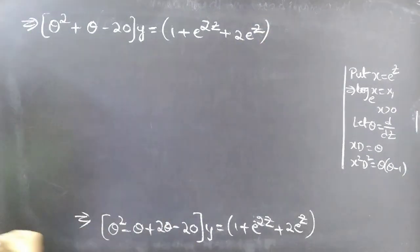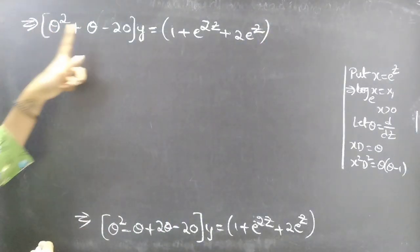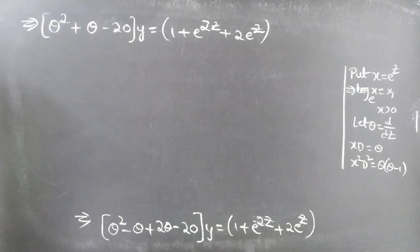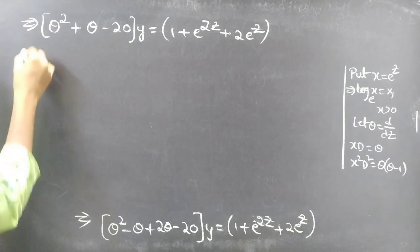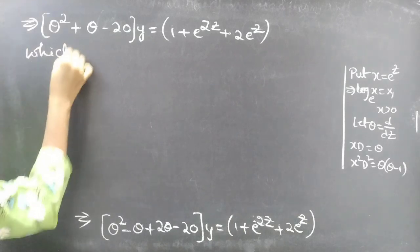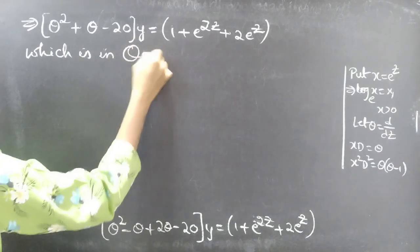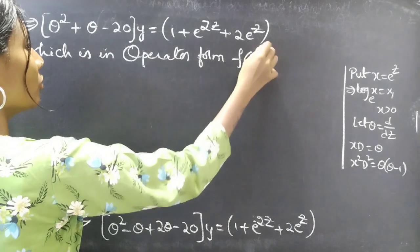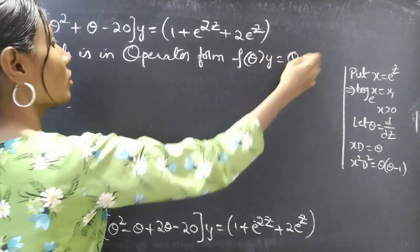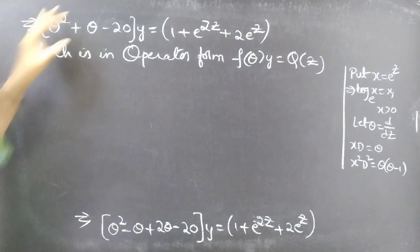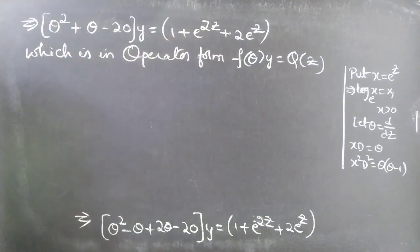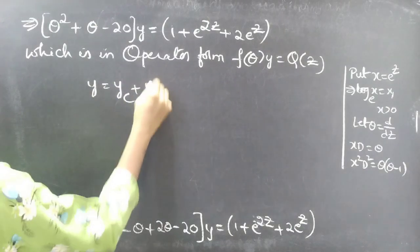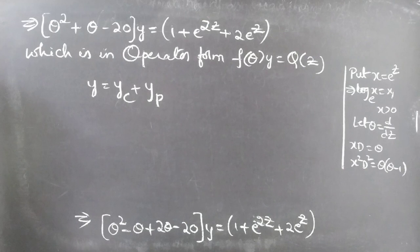We have now reduced the given equation to an equation with constant coefficients. We need to find the general solution which is given by y equals yc plus yp. Let's now find yc and yp, where f of theta equals theta squared plus theta minus 20.